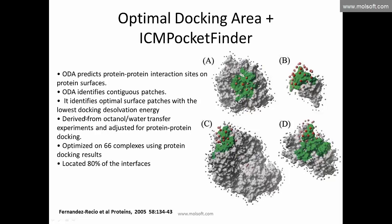ODA was published back in 2005 and it performed well — tested on 66 different complexes from the PDB, it correctly locates 80 percent of the interfaces. It gives you a guide of where a protein-protein interaction pocket may be. This, in combination with experimental data such as mutational data, is useful. If you don't have any experimental data, it will find you some patches on the surface that you could target.